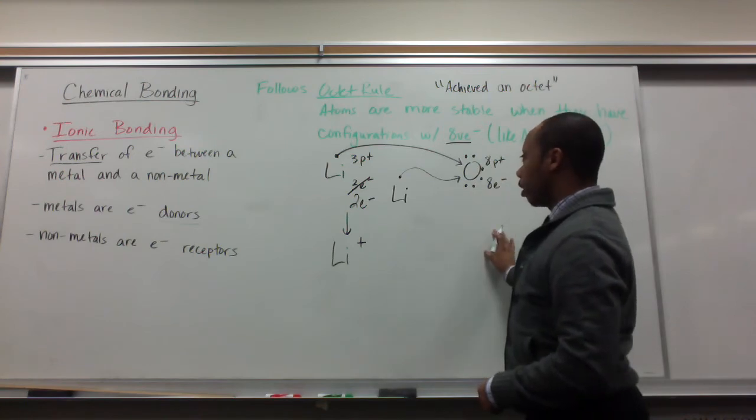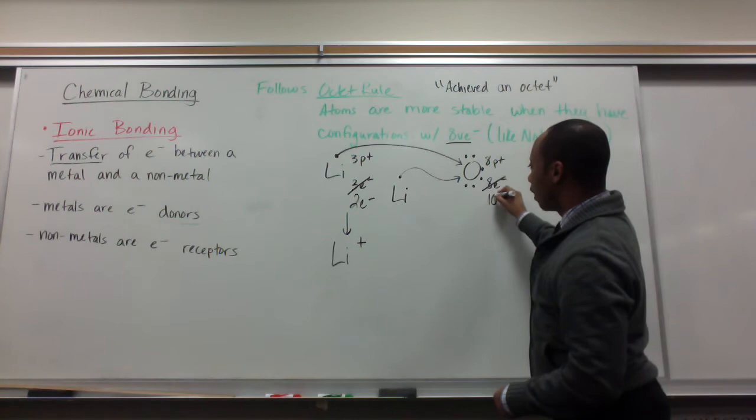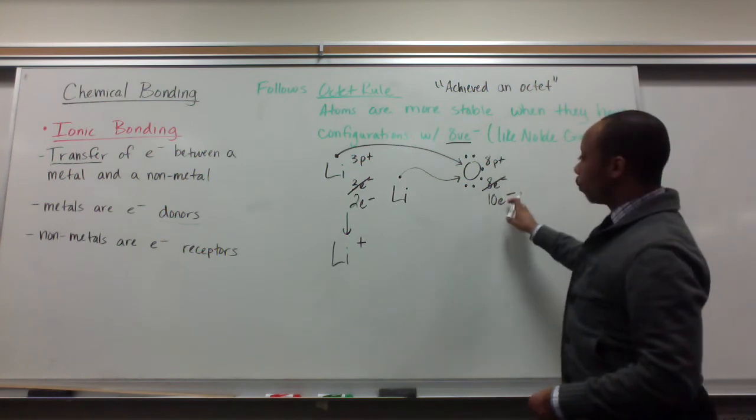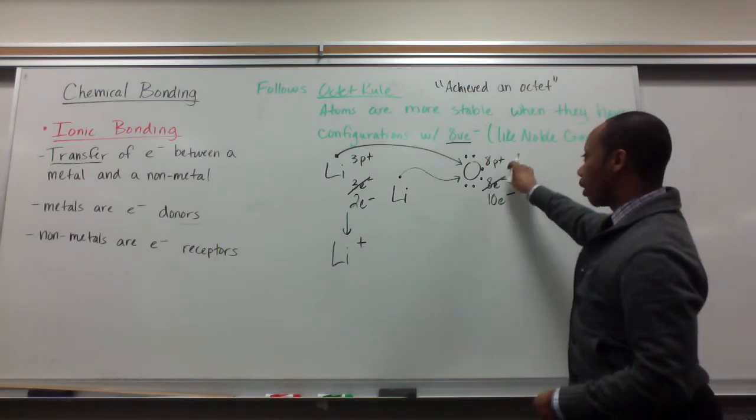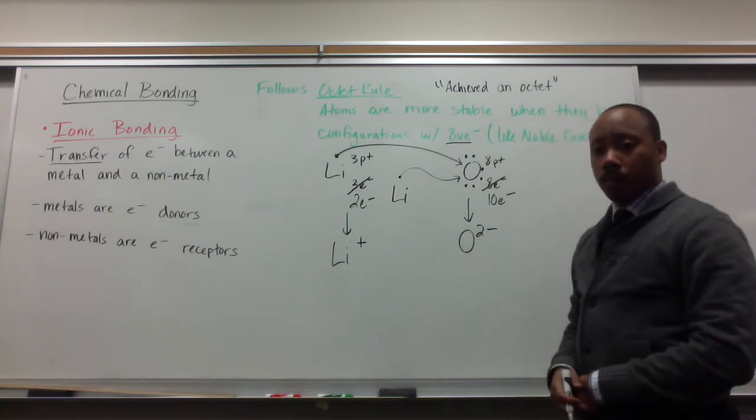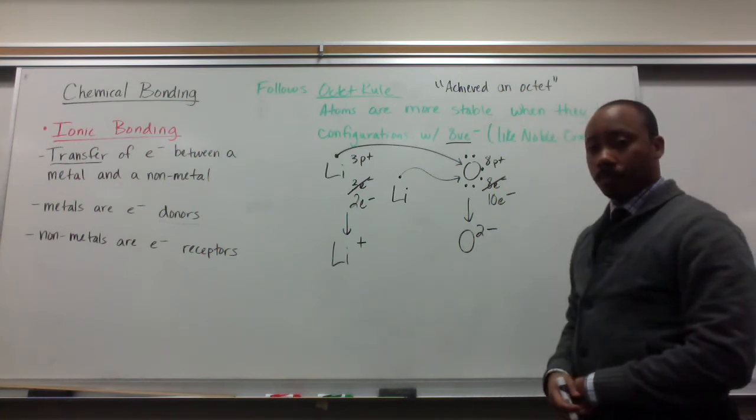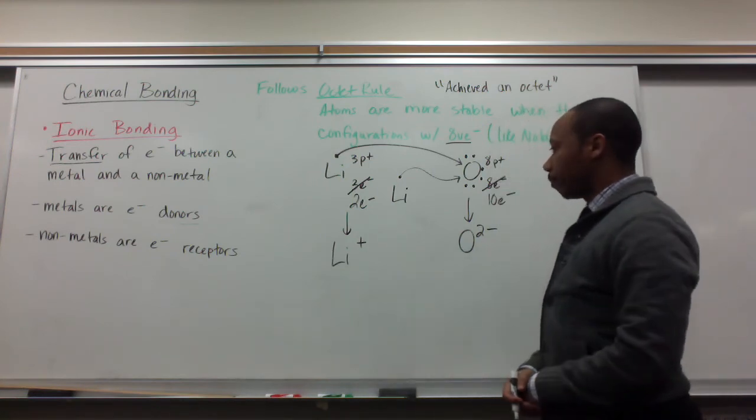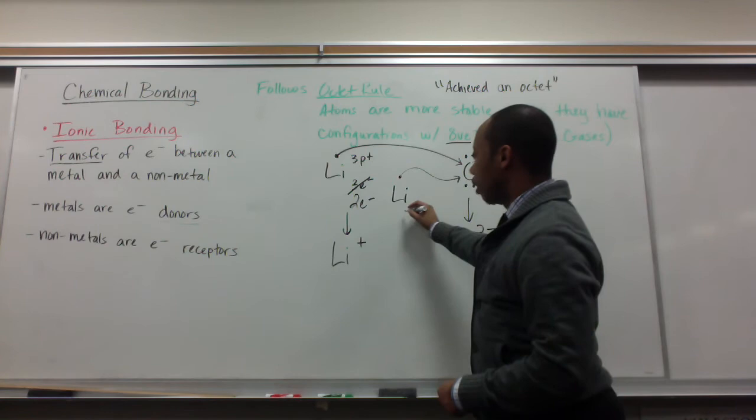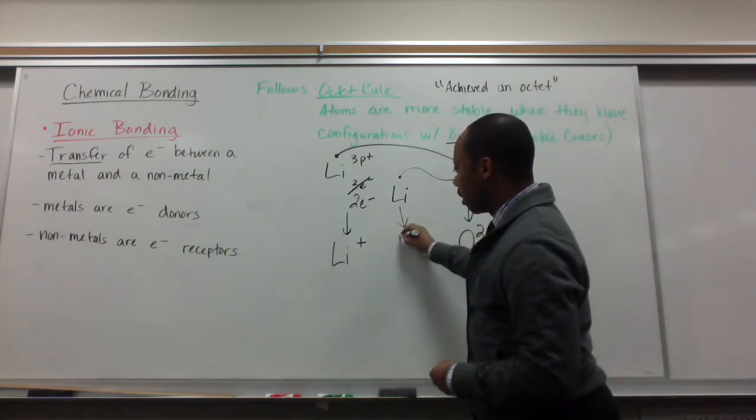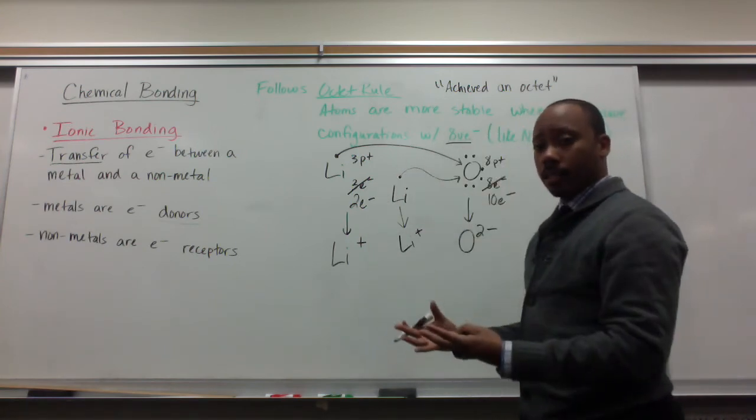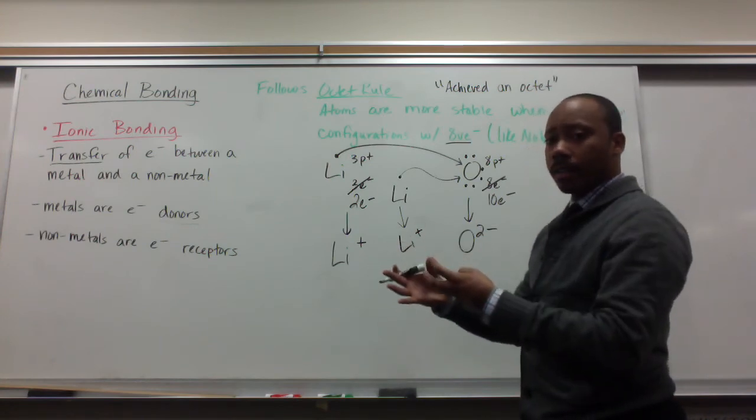So oxygen has gained two electrons. It went from eight to ten electrons. Now ten to eight—ten overpowers eight. So I have two more negative electrons than I do protons. Therefore, my oxygen becomes charged by two, represented as O2-. So I have lithium plus and O2-. Now since this lithium atom also gave its electron, you can say that one became the same as this Li one plus.